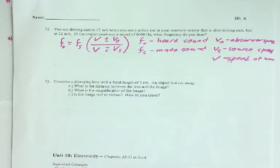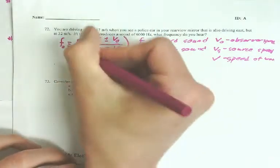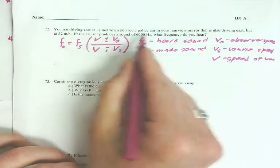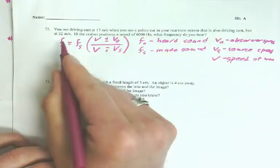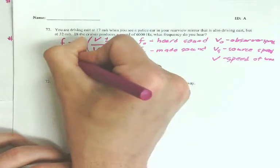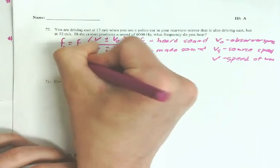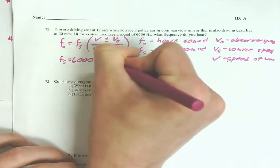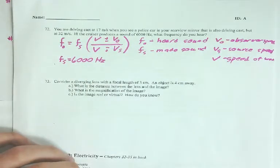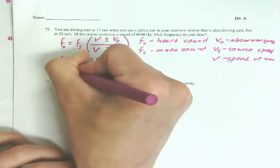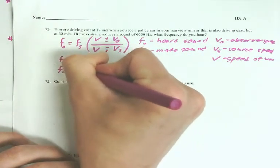Okay, so now it's a matter of doing my knowns and unknowns here. You're driving east at 17. You see a police car in the rear view mirror that's also going east, but at 32. If they produce a sound of 6,000, so that's F-S, they make the sound of the frequency of 6,000. What is heard? So, you hear F-O, we don't know what that is.